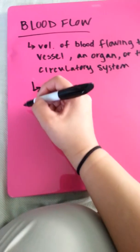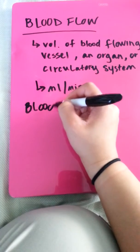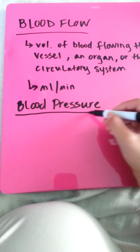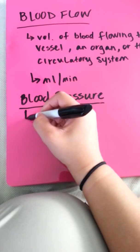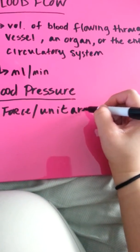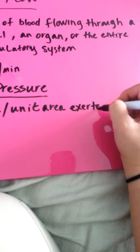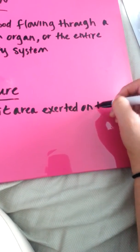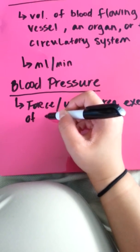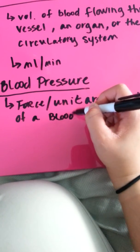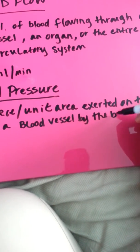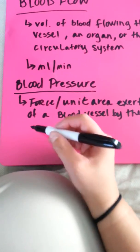The next one is blood pressure, I believe. This one is force per unit area exerted on the wall of a blood vessel by the blood. And this one is expressed in mmHg.